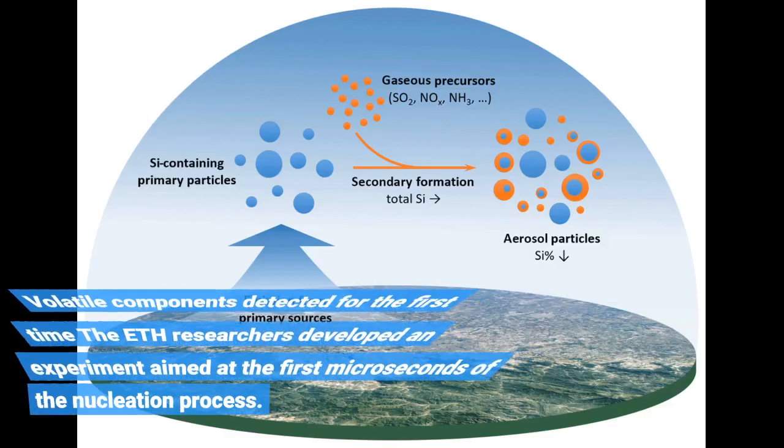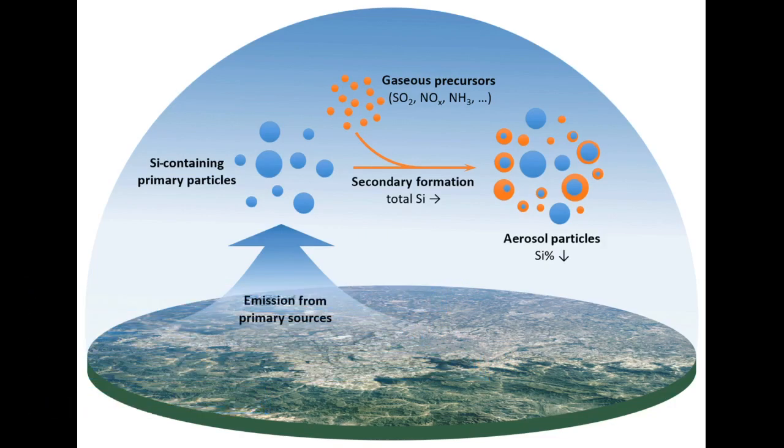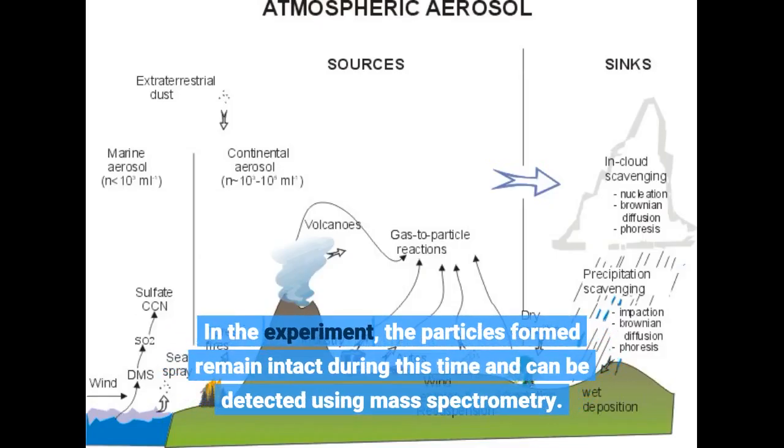Volatile components detected for the first time. The ETH researchers developed an experiment aimed at the first microseconds of the nucleation process. In the experiment, the particles formed remain intact during this time and can be detected using mass spectrometry.